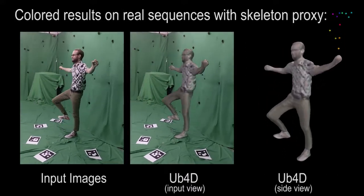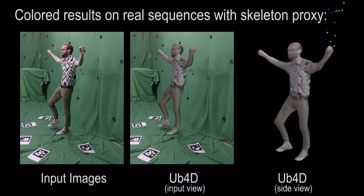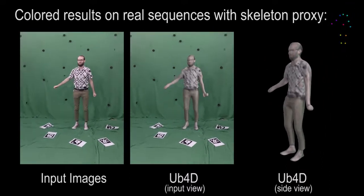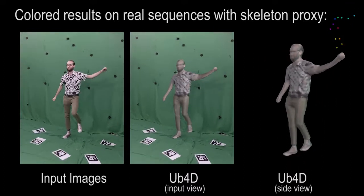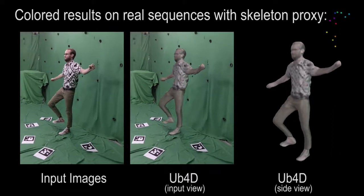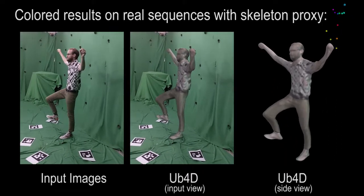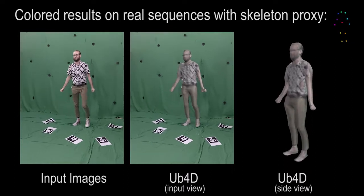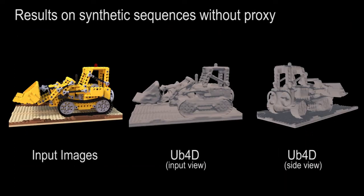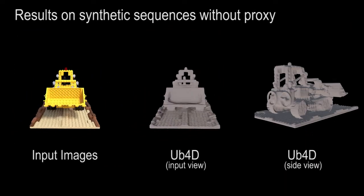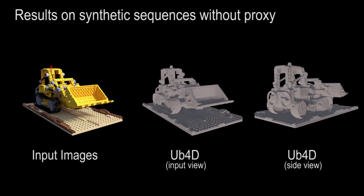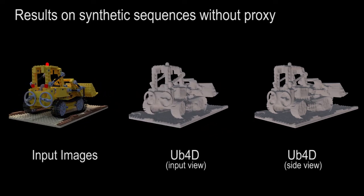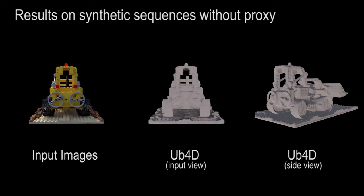We validate that our method can accept even coarser geometric proxies by using only a 12-vertex skeleton for this real-world scene featuring large deformations. On the third-party synthetic Lego scene, both static and deforming parts of the object are faithfully captured by our approach.